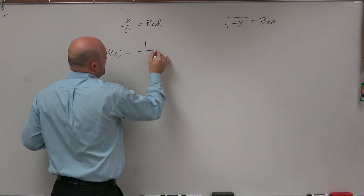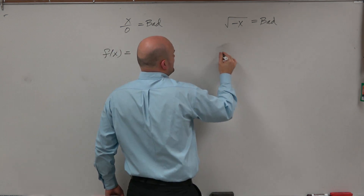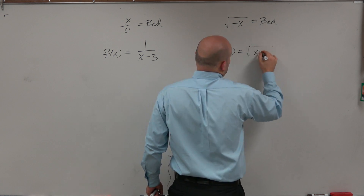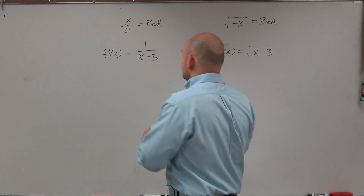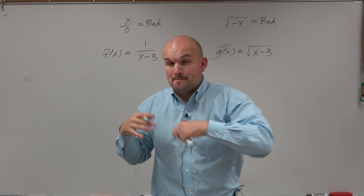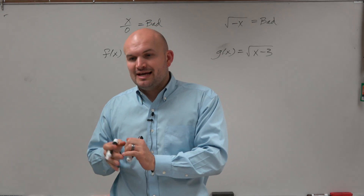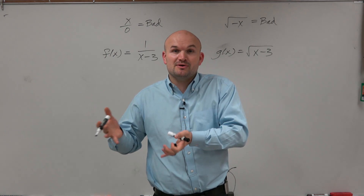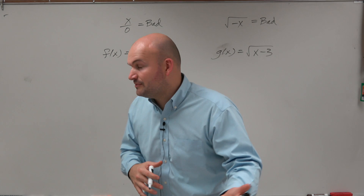f of x equals 1 over x minus 3, and g of x equals the square root of x minus 3. For these two functions, we recognize that one is a reciprocal and one is a square root, so bad numbers can occur. We want to determine where those bad numbers are and therefore not include them within the domain.